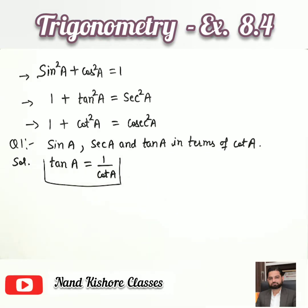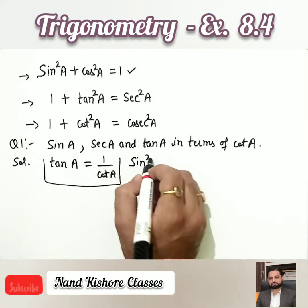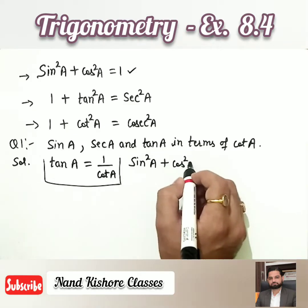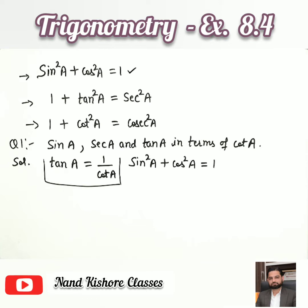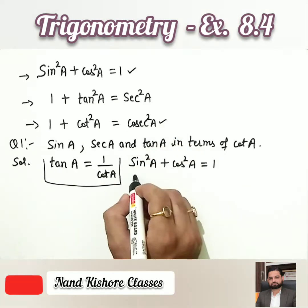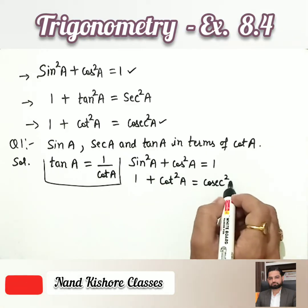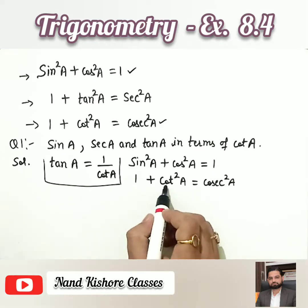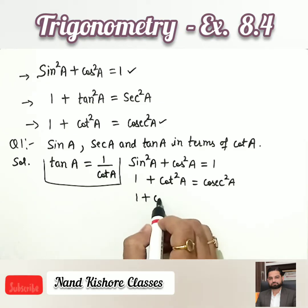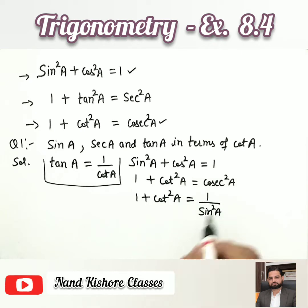That third part should be clear to all. Now for sin A, I will use the formula sin²A + cos²A = 1, together with 1 + cot²A = cosec²A. cosec²A can be written as 1/sin²A.